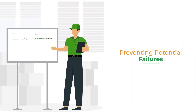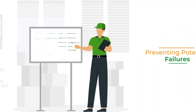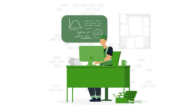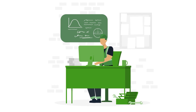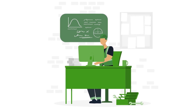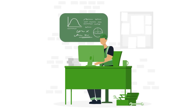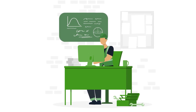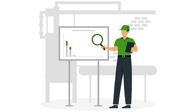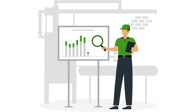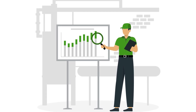Preventing potential failures. By analyzing data and conducting tests, weak links and inefficiencies in a system can be identified. Processes can then be improved to keep breakdowns at bay.